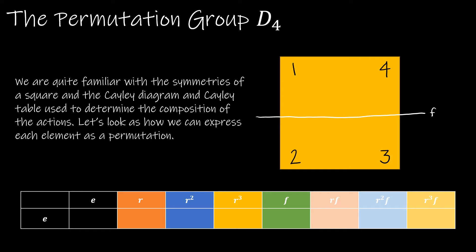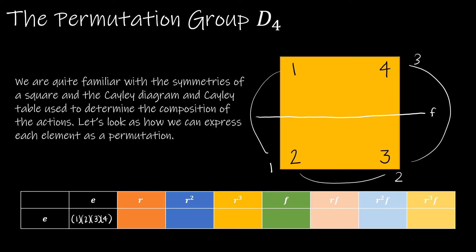Let's take a look at how I can write D4 as a permutation group. We'll assume F is a horizontal flip and any rotation R is 90 degrees counterclockwise. The identity E maps one to one, two to two, three to three, four to four, because for the identity nothing happens. For R, a 90-degree rotation counterclockwise, one would end up in the two position, two in the three position, three in the four position, and four in the one position.